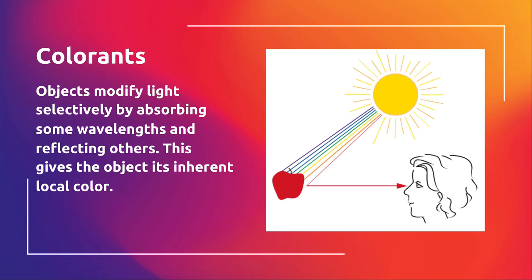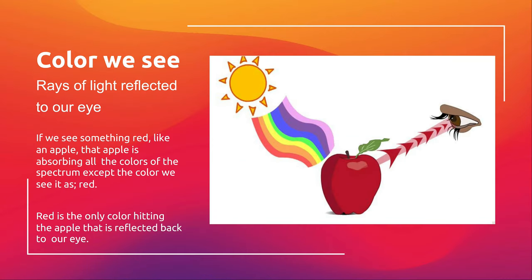That basically gives an object what they call local color — its inherent color. Rays of light are reflected to our eye. Red is the only color hitting the apple that comes back to our eye; all other wavelengths are absorbed by the object. How the object determines which wavelengths are absorbed, I have no idea — I'm an artist, not a scientist. Different wavelengths are absorbed, others are reflected, and our eye picks those up.